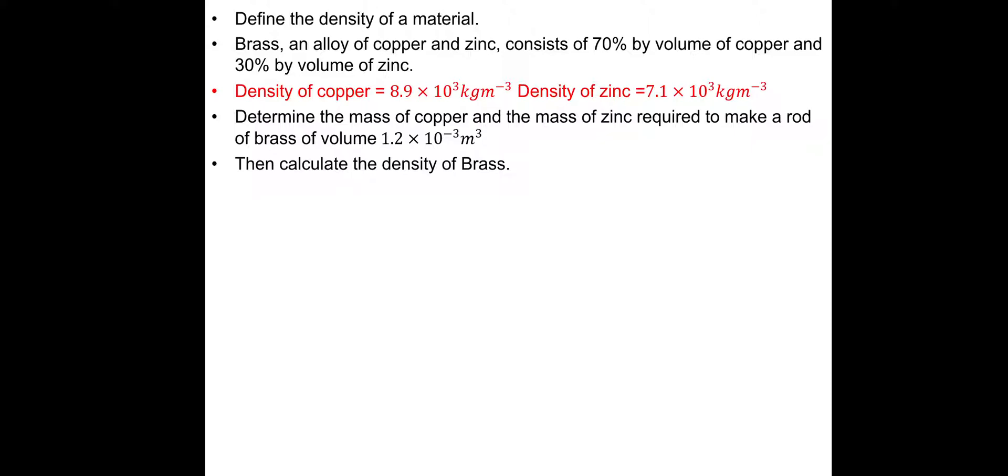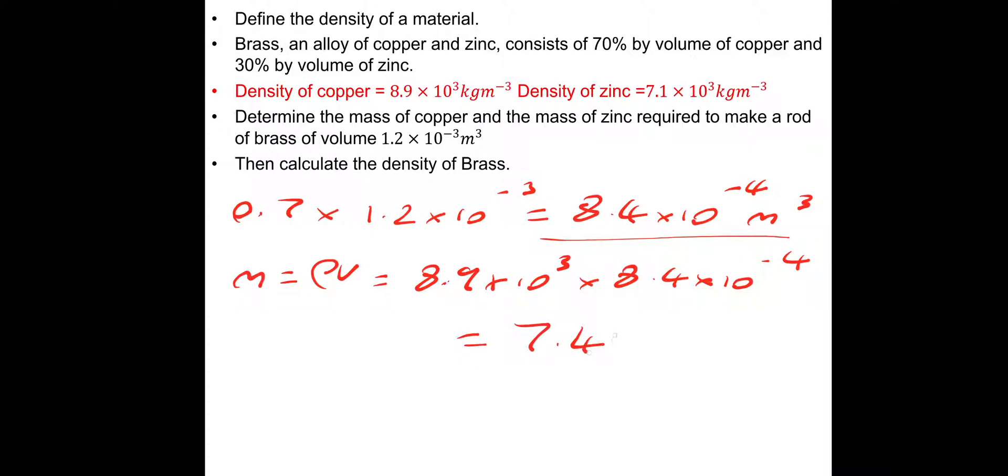First of all, let's find the mass of copper. We need to get it by volume. So, it's 70%. What we need to do is 0.7 for 70% of the volume, which is 1.2 times 10 to the minus 3. That gives us the volume of copper of 8.4 times 10 to the minus 4 cubic meters. Then we can just get the mass. Mass is density times volume. The density, which is given 8.9 times 10 to the 3, 8,900. Multiply by the volume, 8.4 times 10 to the minus 4. So, the mass of copper is 7.476 kilos.